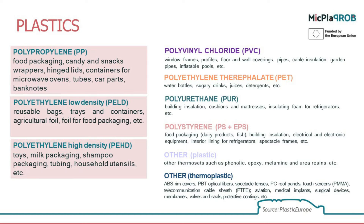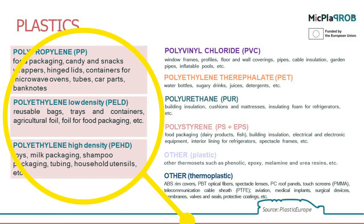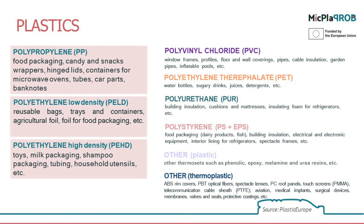I elaborated on these most common polymer materials, adding information on where to find them. I focused on two predominant groups — polypropylene and polyethylene — which, depending on the application, are found in many packaging materials, foils, bags, and toys. Logically, these polymeric materials are also the most present in our everyday lives.